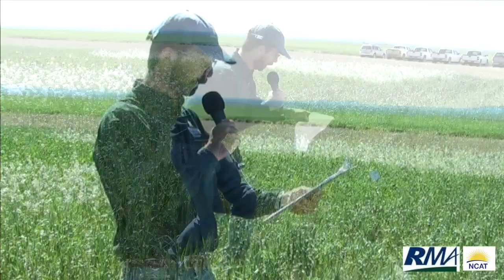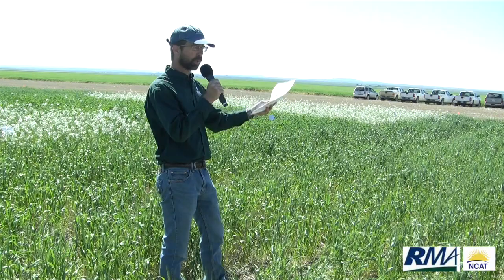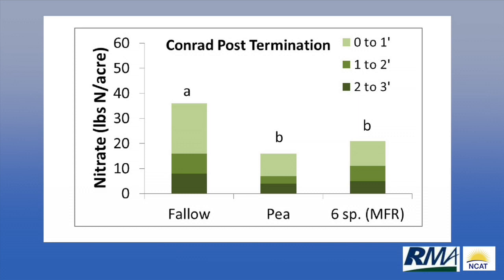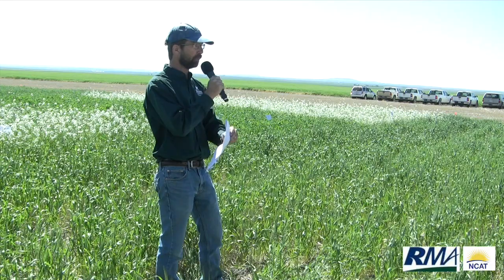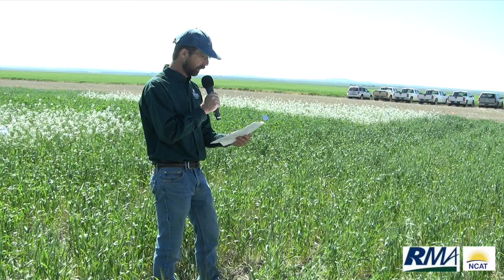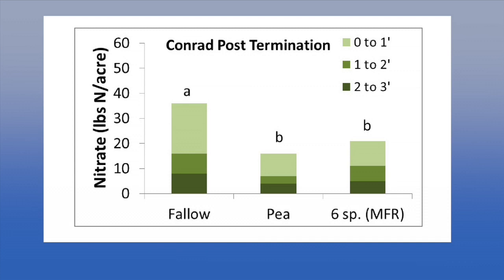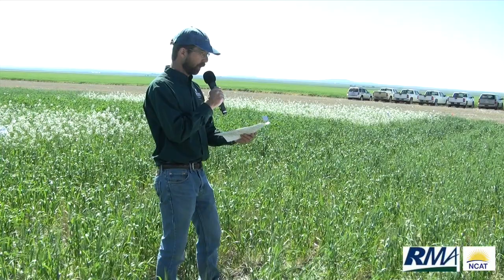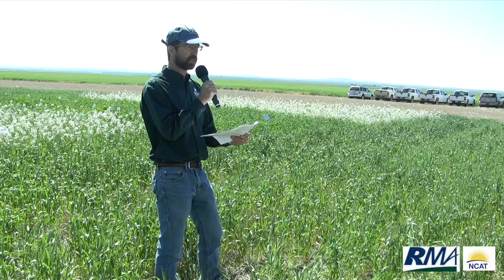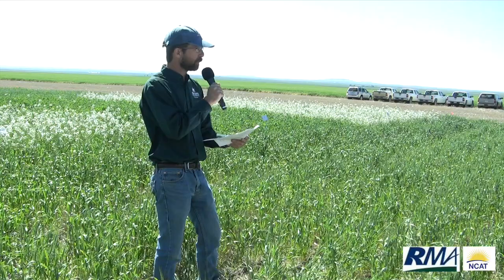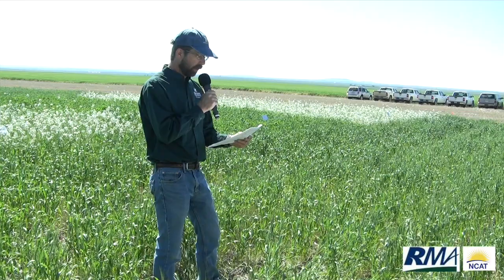I have two graphs showing soil nitrate in the top three feet measured at this location, and in the top two feet measured at Dutton, about 20 miles to our south. That top graph compares fallow, pea, and our six-species mix — the eight-species mix minus our fibrous-rooted species, which was the one that wasn't full of downy brome, because we were able to spray out the grasses with a grassy herbicide. On the vertical axis, we have nitrate in pounds of nitrogen per acre. The nitrate following fallow was about 20 pounds more than following either pea or our six-species mix. So spring wheat went into that Conrad site with somewhat less nitrate following our mixes than following fallow, and sometimes we see that reflected in decreased protein or decreased yield.